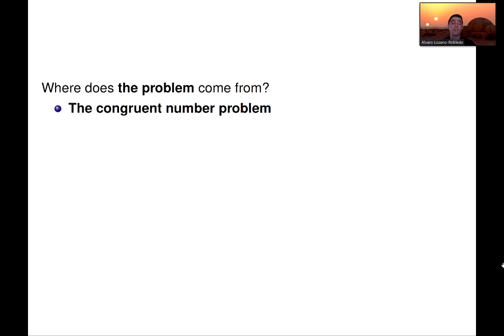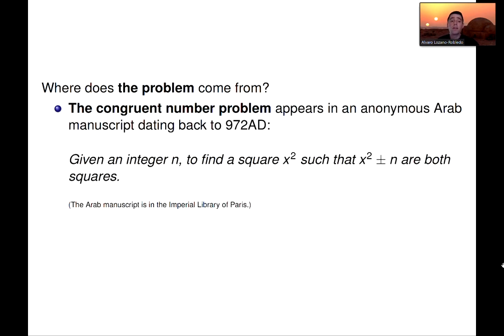The problem itself, as I said, it seems Palermo collected problems that were floating around at the time. We know that at least the problem is more than 1,000 years old. It dates to an Arab manuscript about 972 A.D., and the problem there is more general. For example, given an integer n, you find a square, x squared, such that x squared minus n and x squared plus n are both squares.